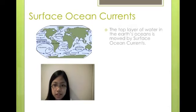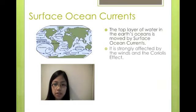The top layer of water in the Earth's oceans is moved by surface ocean currents. It is strongly affected by the winds and the Coriolis effect.